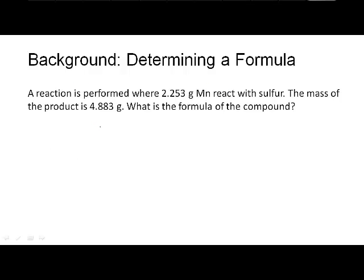Here's an example. We do a reaction where we react 2.253 grams of manganese, a metal in the periodic table. We react it with the element sulfur, and that produces 4.883 grams of a compound, and we want to know what's the formula of that compound.